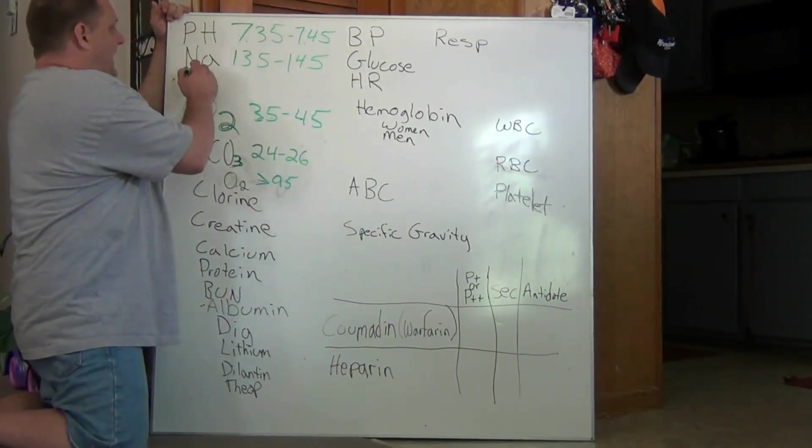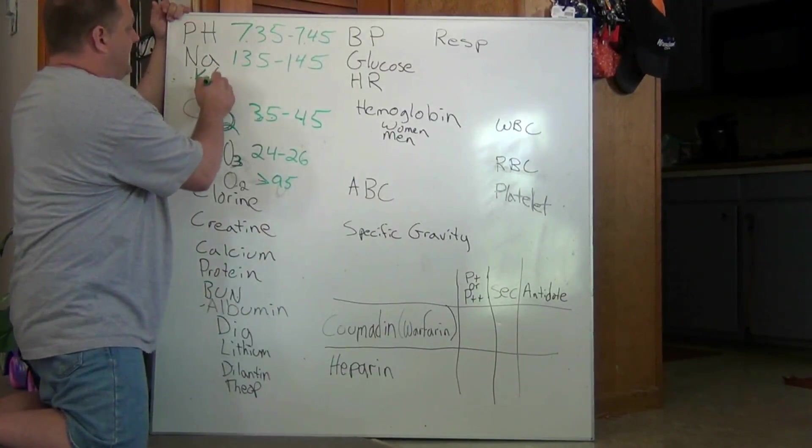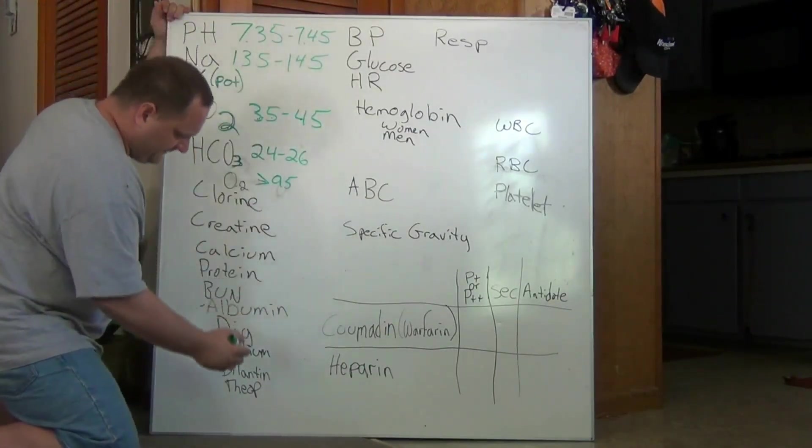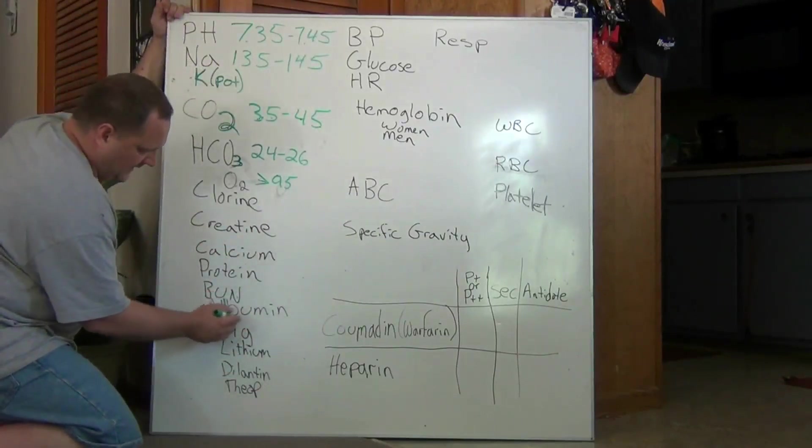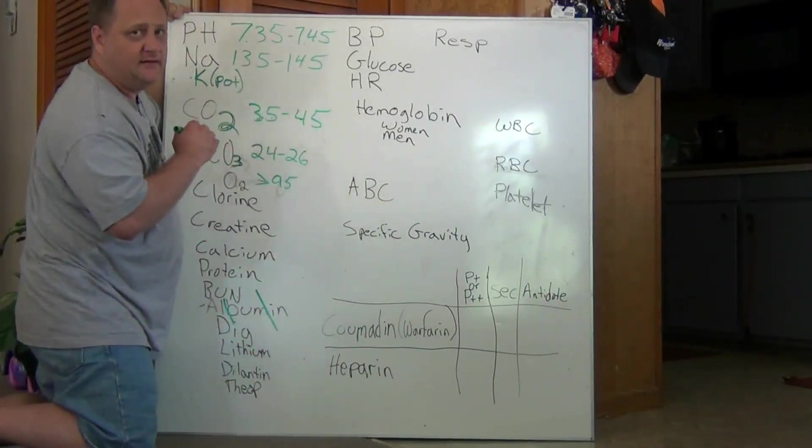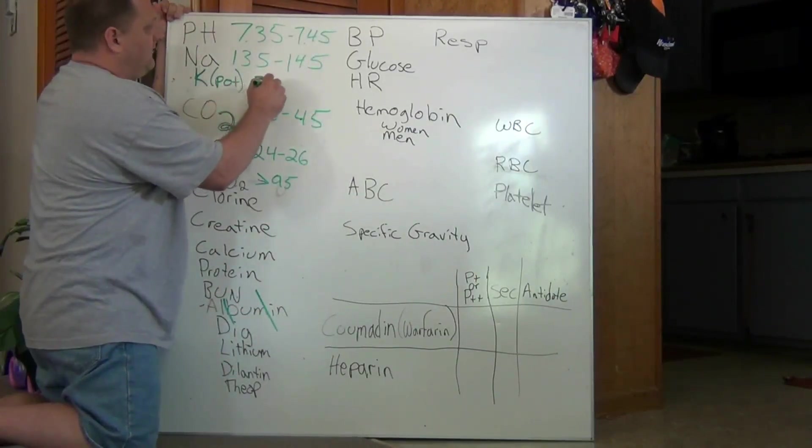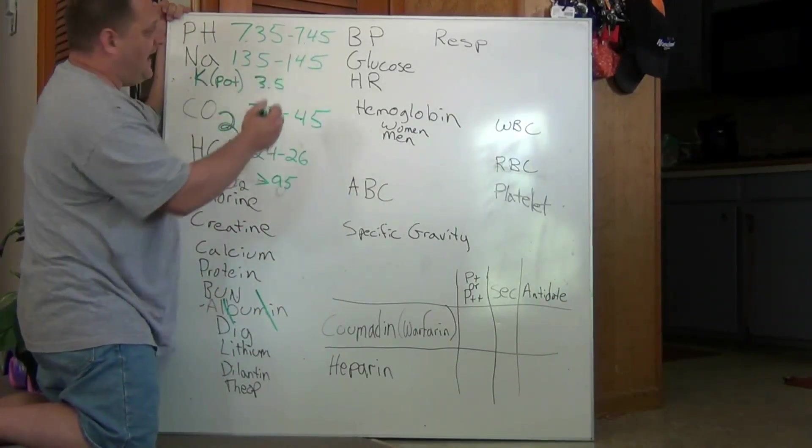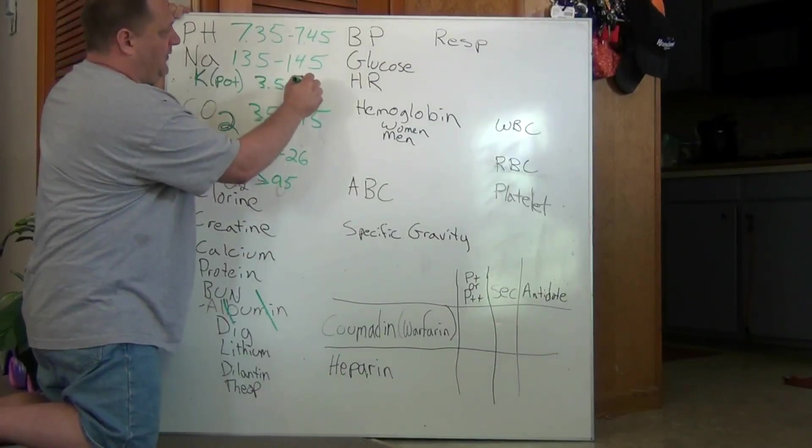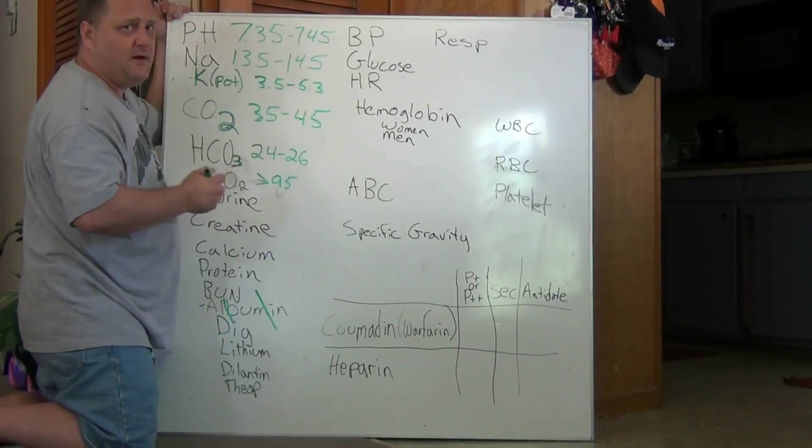If we look at potassium here, or K, or potassium, I kind of remember a bum smoking 3 to 5 joints a day. So we have 3.5 and typically it will be about 5.3 or 5.0, something along those lines.